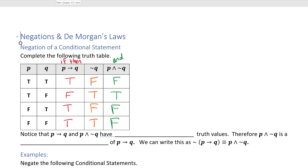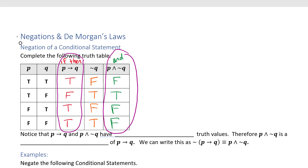Now I want to analyze the truth table. Take a look at our 'if P then Q' column in red and then our 'P and not Q' column. Notice each of the truth values are exactly opposite: true/false, false/true, true/false, true/false — every single truth value is opposite. Therefore, P and not Q is a negation of 'if P then Q.' We say: the negation of — or it is not true that — 'if P then Q' is equivalent to P and not Q. So if you take 'if P then Q' and 'P and not Q,' they are actually negations of each other.